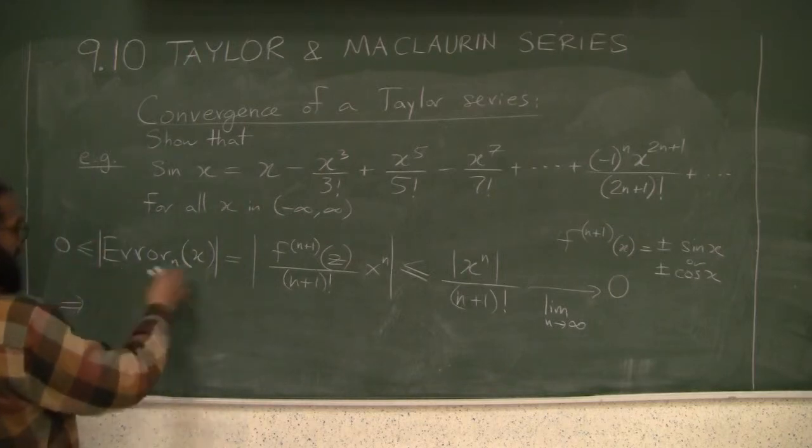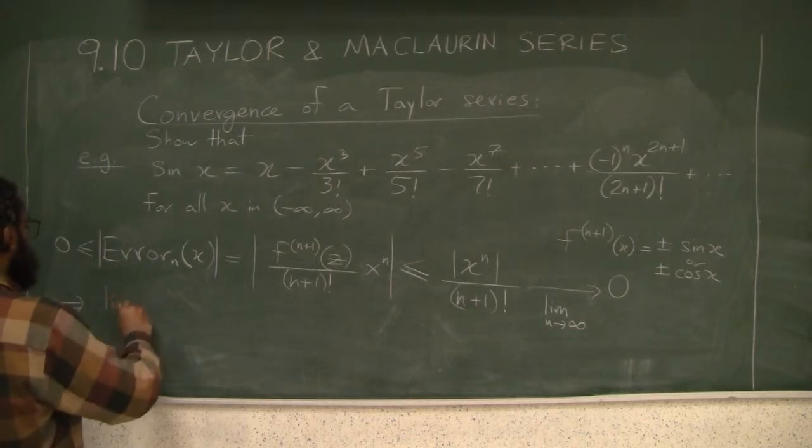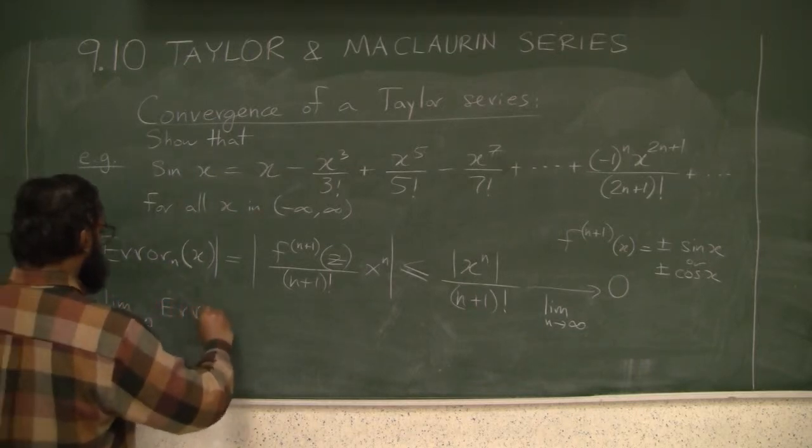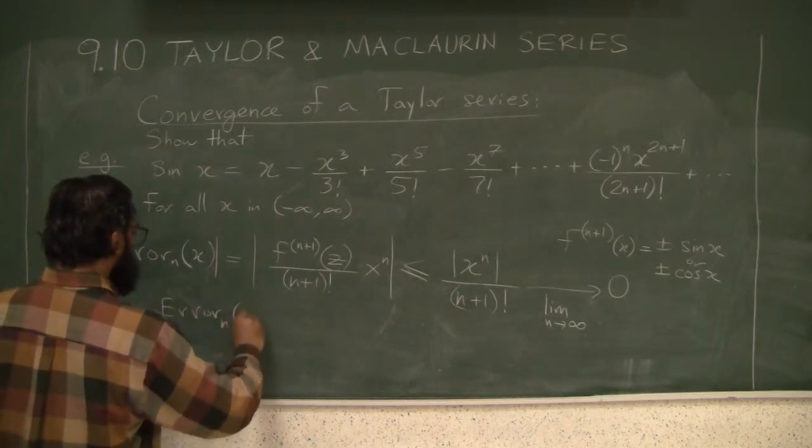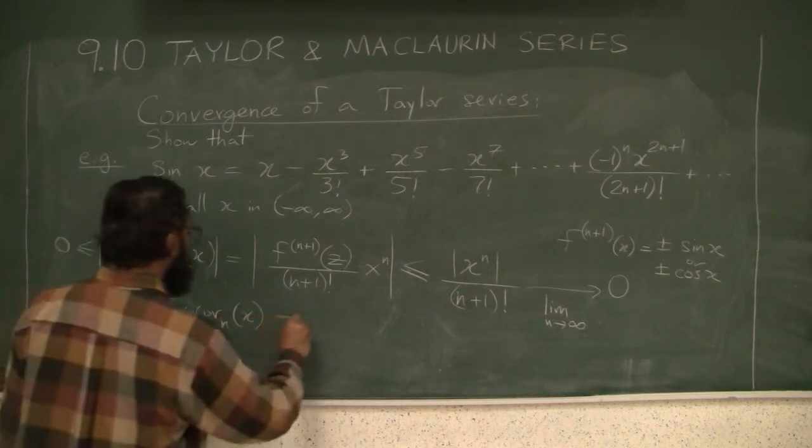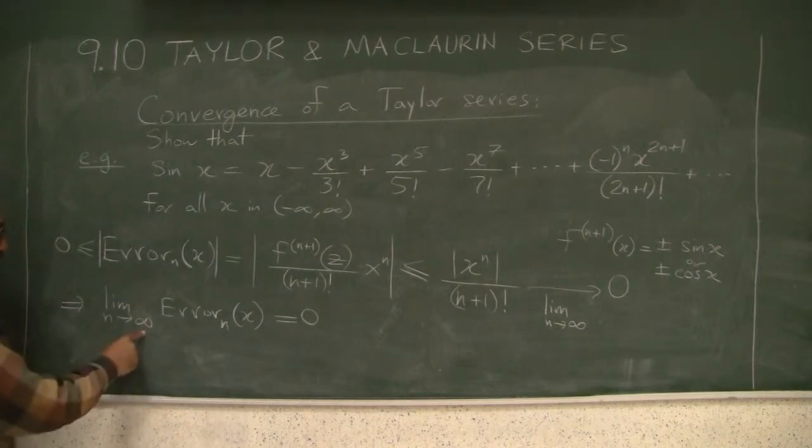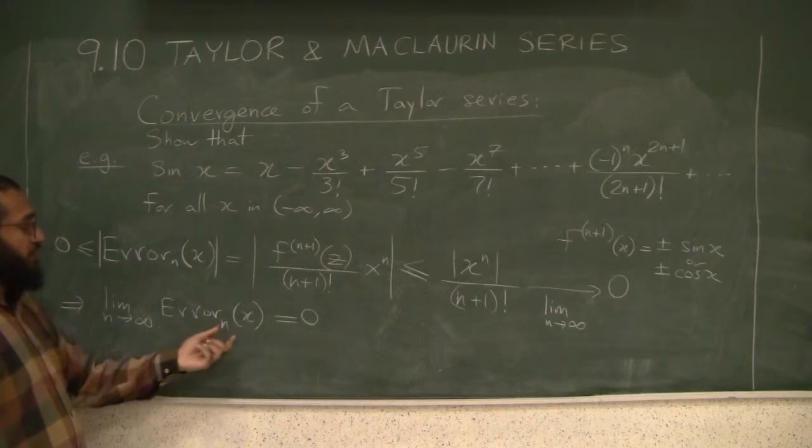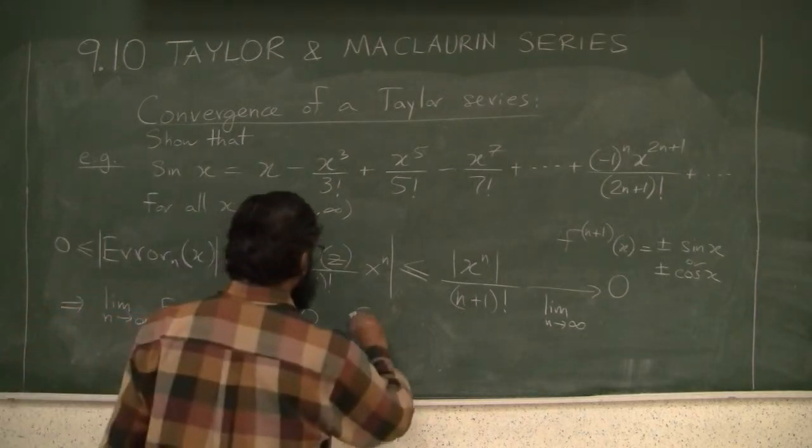So the error is trapped between 0 and 0. So using the squeeze theorem, we know that the absolute error is going towards 0 and so the error itself is going towards 0. So this thing equals 0. As n goes to infinity, you calculate the error term of the nth polynomial at the given x, it equals 0 for every x.